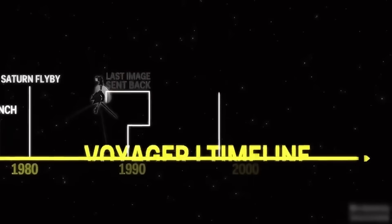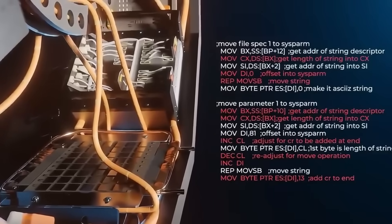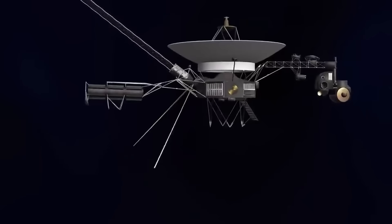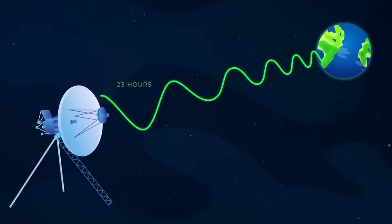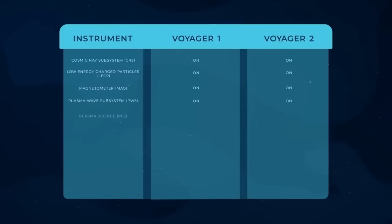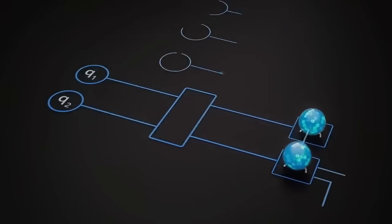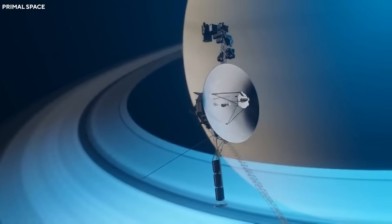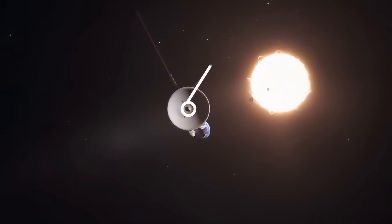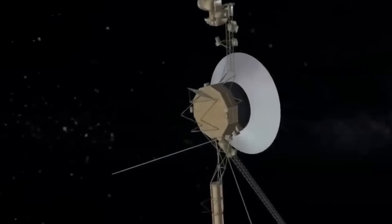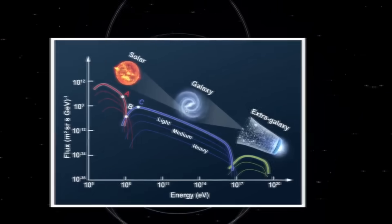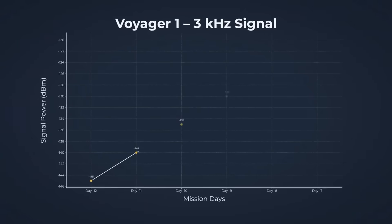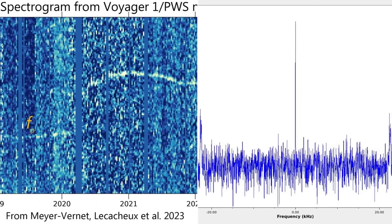The official NASA explanation remains straightforward. A corrupted memory chip caused the transmission errors. Engineers successfully rerouted the code by April 2024, and Voyager resumed normal communication. But this leaves questions unanswered. Why did the error pattern show such structured repetition? And why did similar anomalies appear in Voyager's data years before the official glitch? The beauty of space exploration lies in its mysteries. Sometimes fixing a problem uncovers deeper questions about what we're really seeing out there. Is Voyager carrying a hidden calibration code from the 1970s engineering team? Or did it pick up a cosmic pattern we don't yet understand?